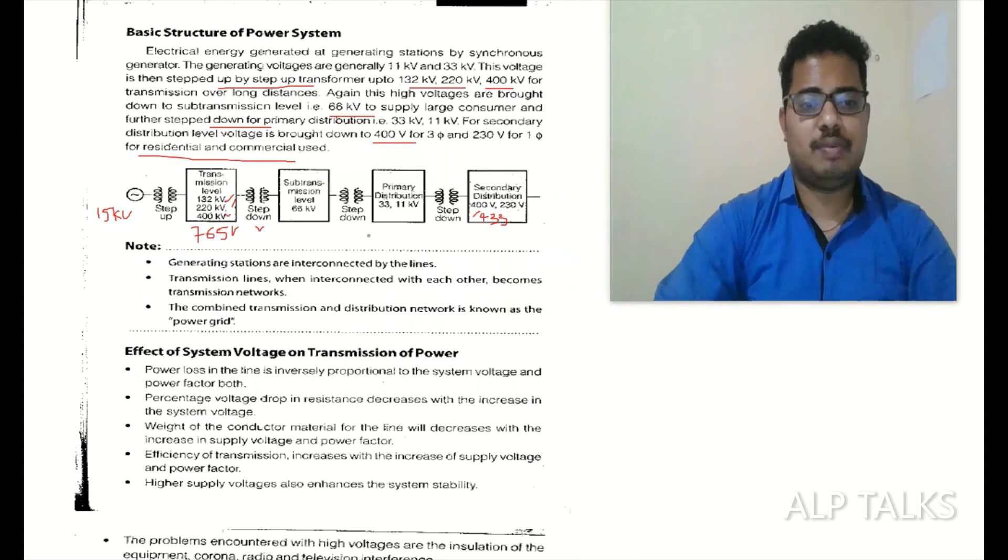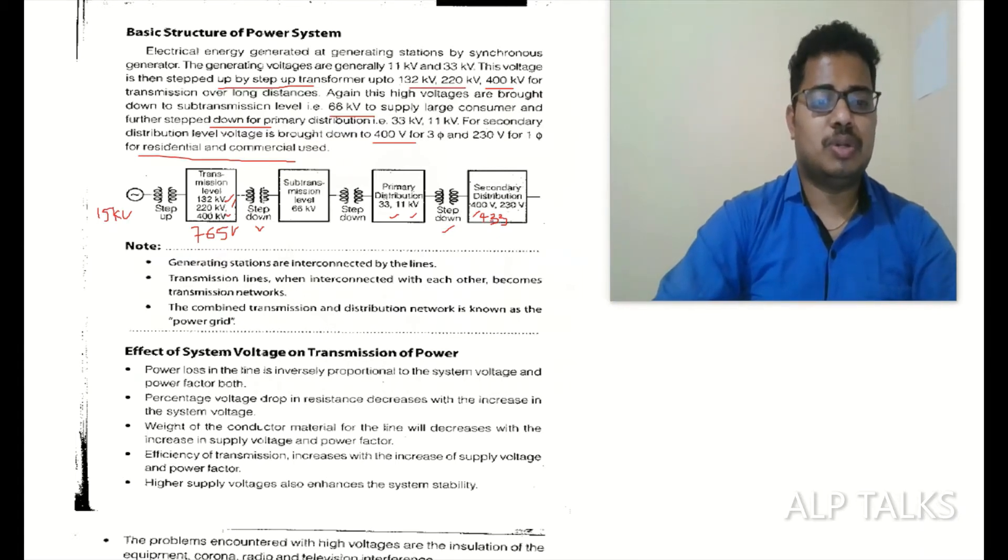Then one more step-down transformer from 33 or 11 kV, and again one more transformer, that is 400 or 415 volts. Phase voltage can be 230 or 250 volts, something like that. It depends on the sequence.